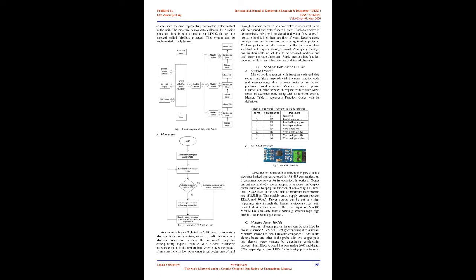The solenoid valve is used to control the flow of water. If the solenoid valve is on, water flows to the crop. If the solenoid valve is off, water flow is stopped, representing that the water in the crop is sufficient for its growth. The on and off signal to the valve is given by the Arduino board according to the moisture sensor value, which is in contact with the crop representing volumetric water content in the soil. Moisture sensor data collected by the Arduino slave is sent to the STM32 master through Modbus protocol. This system can be implemented in a poly house.